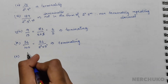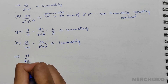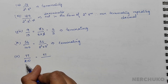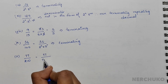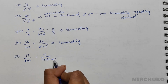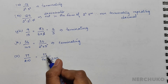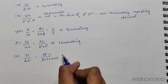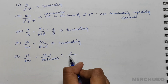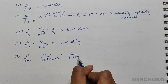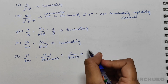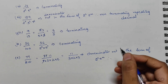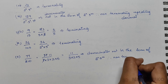For the last bit, we have 77 divided by 210. We can factor this as 7 × 11 over 2 × 3 × 5 × 7. Cancelling the 7s, the denominator still has the prime factor 3 × 2 × 5. Since the denominator is not in the form of 2^n × 5^n, it is a non-terminating repeating decimal.